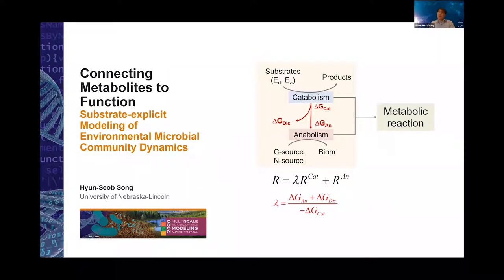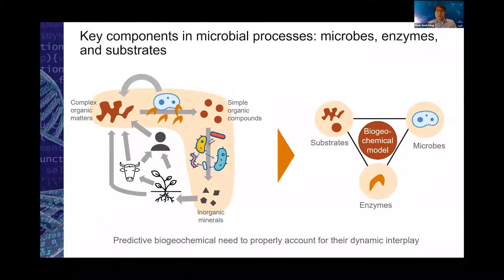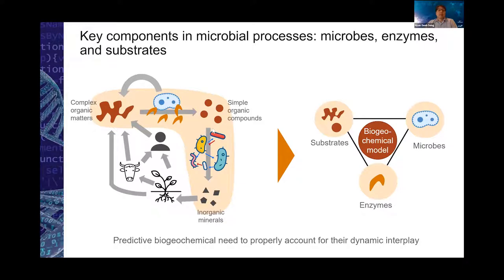Why am I talking about substrate-axis modeling today? The answer can be given by looking at the biogeochemical side on the left. In addition to macro organisms like animals, plants, and human beings, the contribution of microorganisms to biogeochemistry is significant. They synthesize and secrete extracellular enzymes to break down complex organic matter into simple organic compounds. Then the microbial community works together collaboratively, converting these organic carbons and compounds into inorganic minerals, and then the cycle goes on.